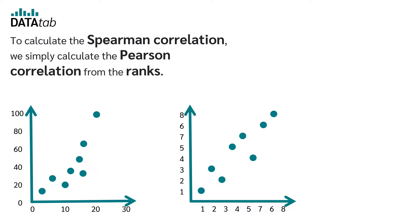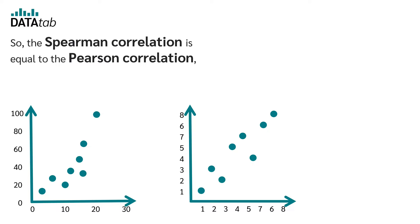To calculate Spearman correlation now, we simply calculate the Pearson correlation from the ranks. So the Spearman correlation is equal to the Pearson correlation, only that the ranks are used instead of the raw values. Let's have a quick look at that in DataTab.